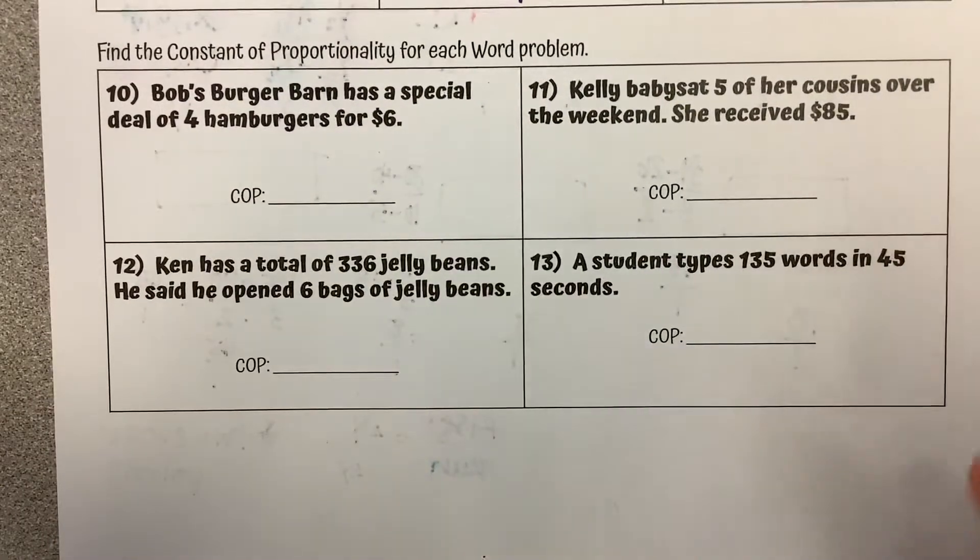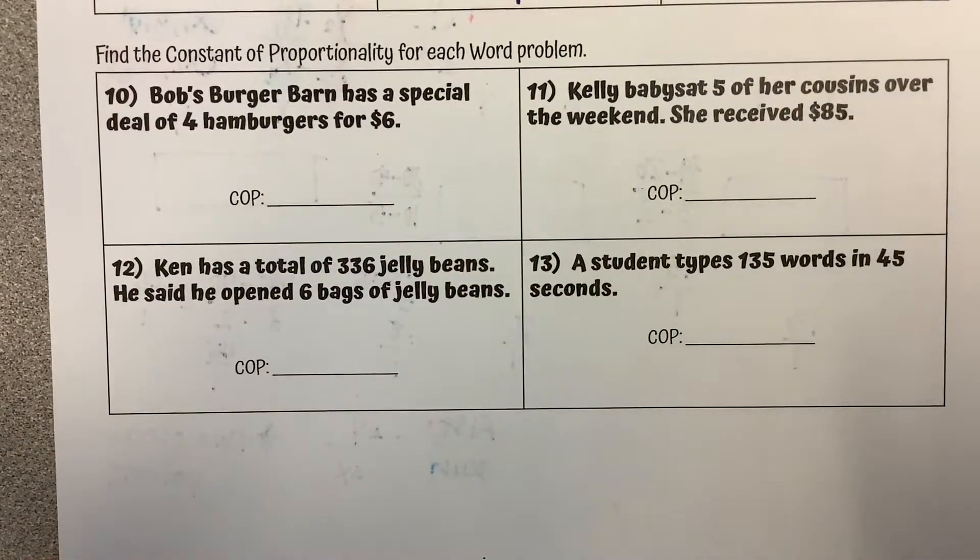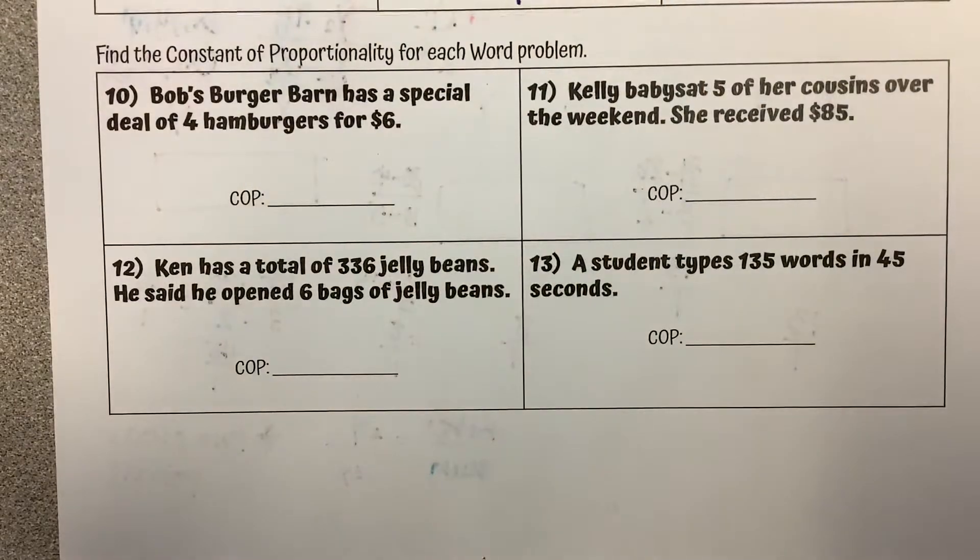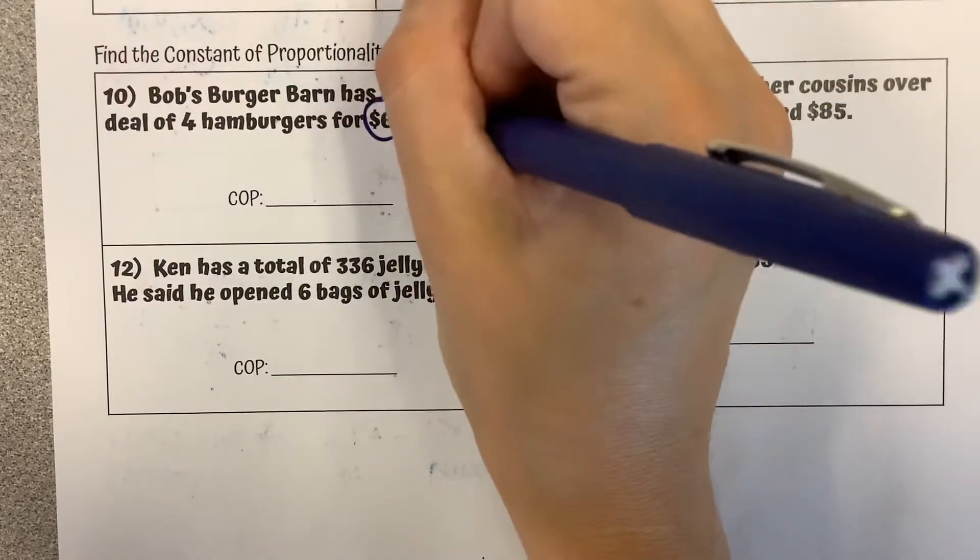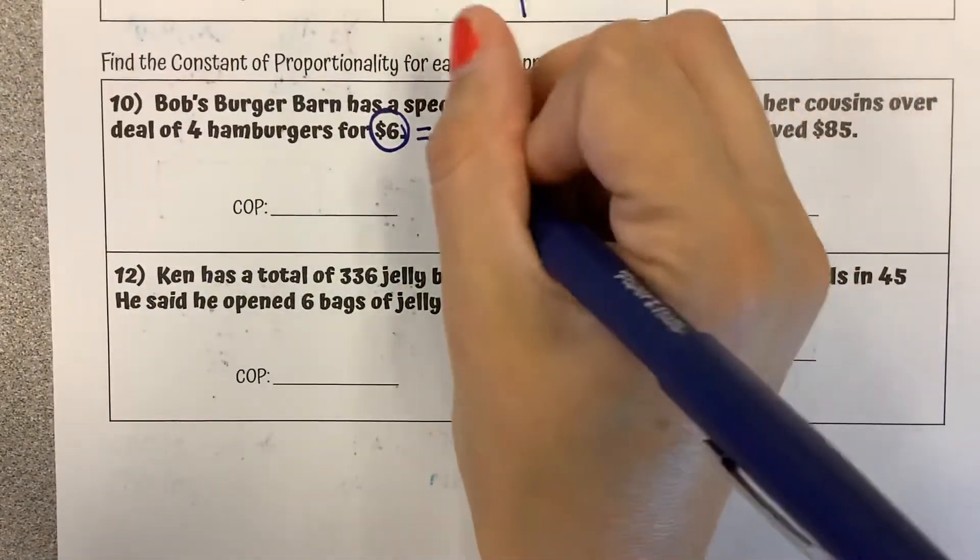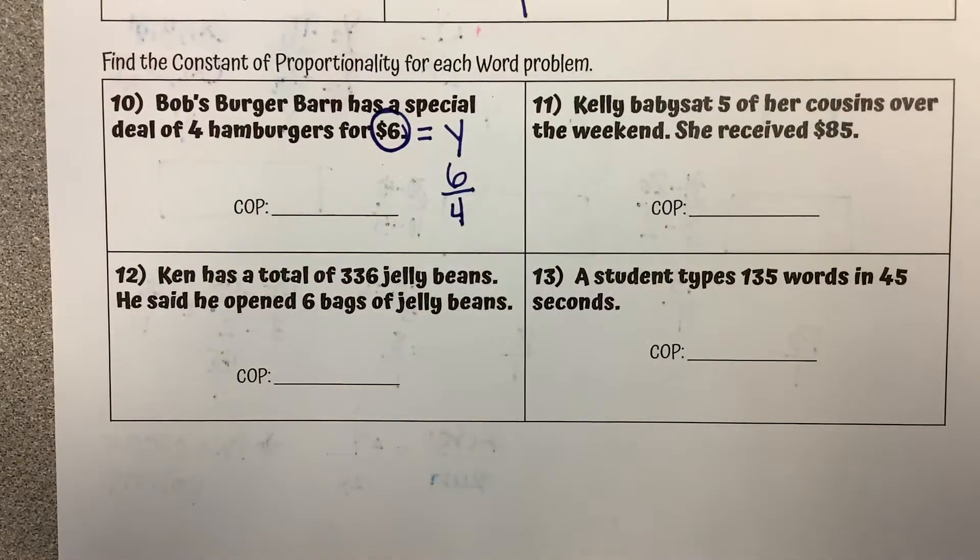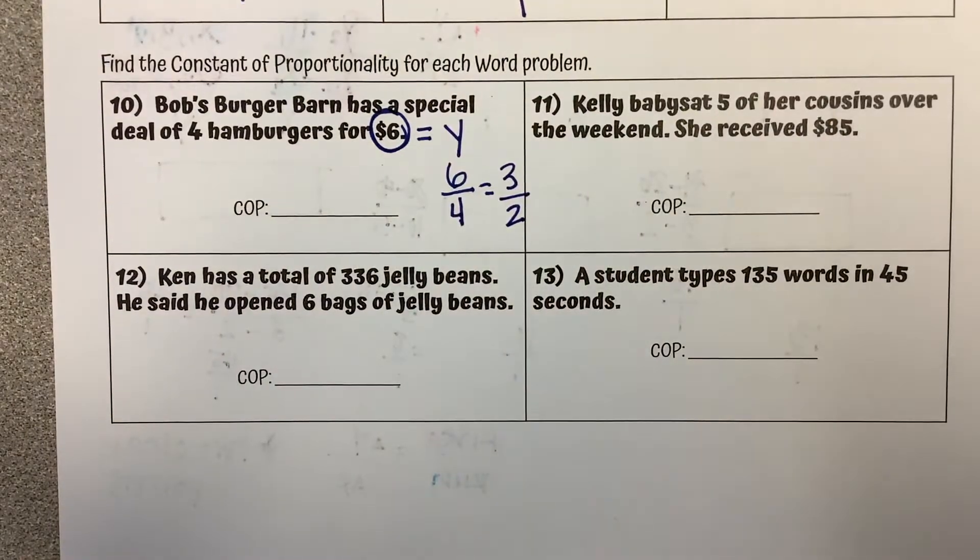And then constant of proportionality for each word problem. So Bob's Burger Barn has a special deal of four hamburgers for $6. So generally speaking money is going to be our y value. So if I'm writing this as a ratio it's $6 for four hamburgers. And if I simplify that, 6 over 4 I'm going to simplify to 3 over 2.